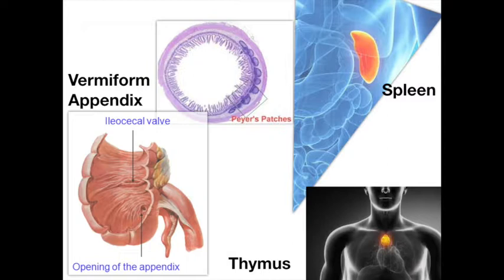The vermiform appendix is lymphatic tissue that hangs from the lower portion of the cecum of the large intestine. Peyer's patches are small bundles of lymphatic tissue located on the walls of the ileum of the small intestine. The spleen is a sac-like mass of lymphatic tissue located in the left upper quadrant of the abdomen, just inferior to the diaphragm and posterior to the stomach. The spleen filters microorganisms and other foreign material from the blood, forms lymphocytes and monocytes, and is hemolytic — meaning it removes and destroys worn-out red blood cells.